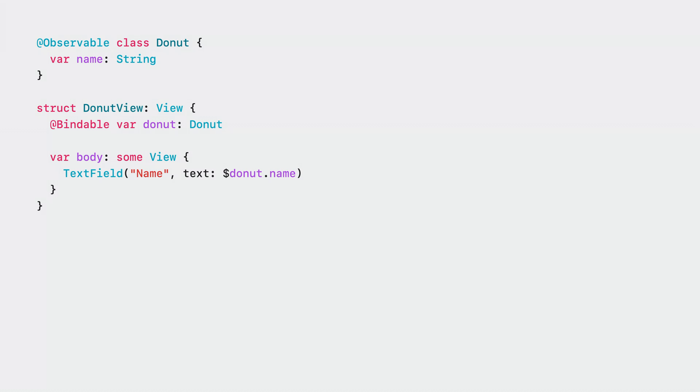To make bindings to the donut, all we need to do is use the @Bindable property wrapper on the donut property. The property wrapper annotation allows us to use the $donut.name syntax, which creates a binding when used.